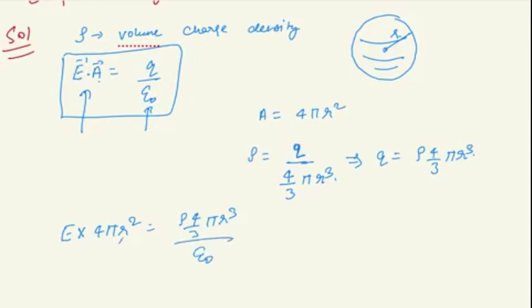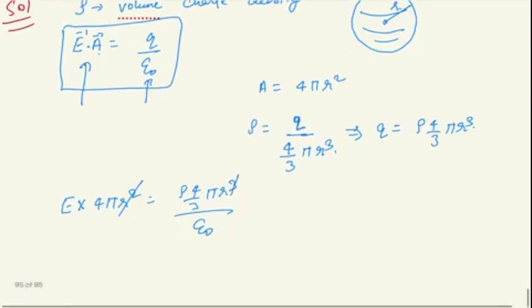From here we can cancel out. We will get only one r, and pi and pi is cancelled, 4 and 4 is cancelled.